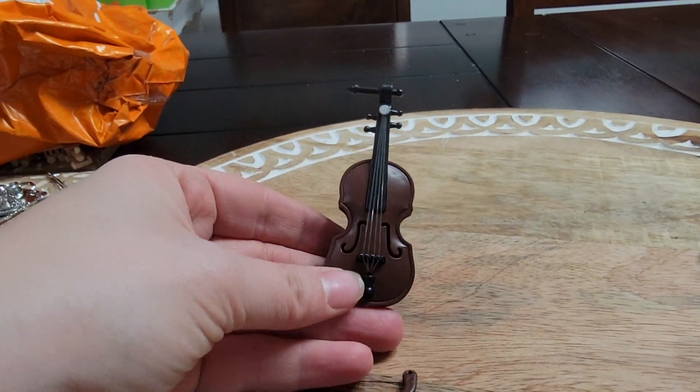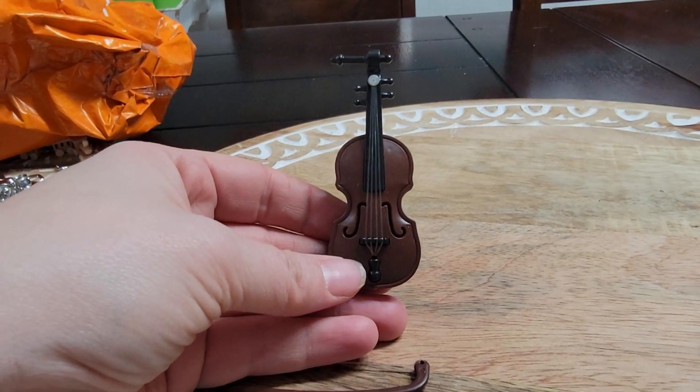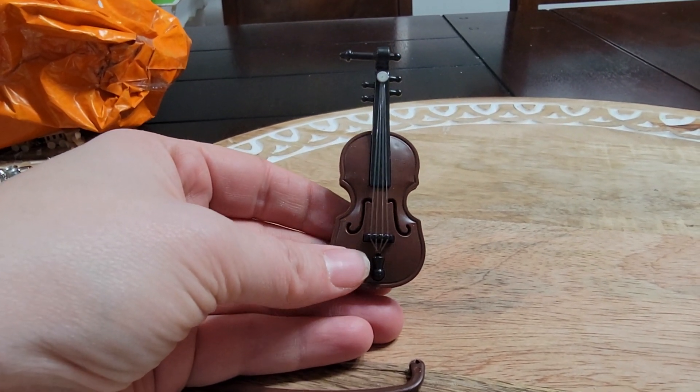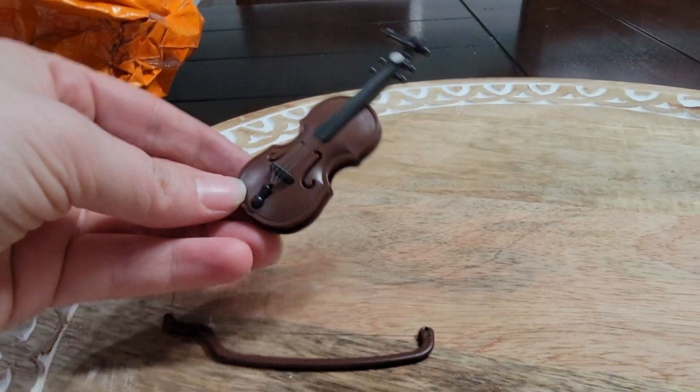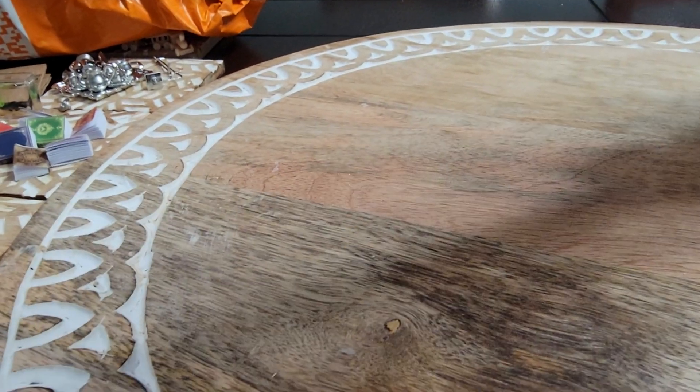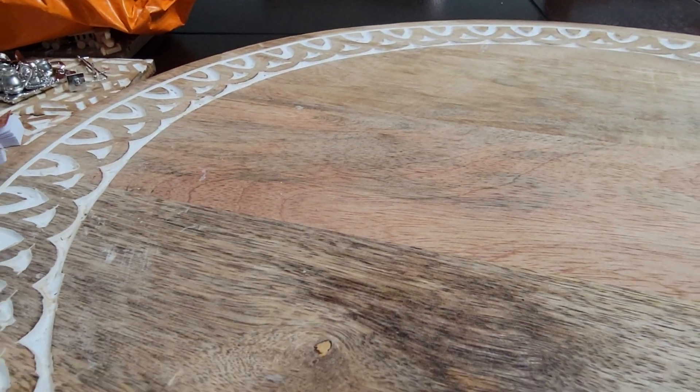But again, check the dimensions because I saw this under when I searched 1:12 dollhouse miniatures. This is definitely not a 1:12. Unless you're making it a cello, then who knows. Because isn't the cello bigger?